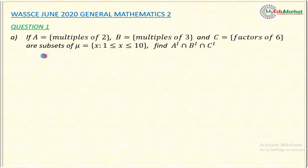Let me attempt to answer this question now. What I will do first is to write all the elements in the given sets — set A, set B, set C, and similarly the universal set.